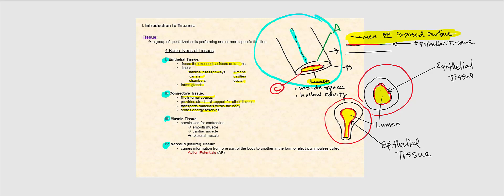Then we have muscle tissue, which is specialized for contraction. We have three types: smooth muscle, cardiac muscle, and skeletal muscle. The last basic tissue type is nervous tissue, which carries information from one body part to another in the form of electrical impulses called action potentials, abbreviated as AP. The details of action potentials will be discussed later when we get to nervous tissue.